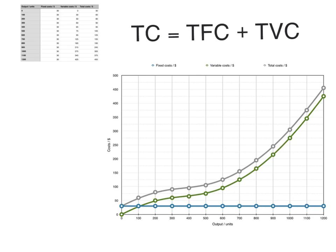If you graph this data from the previous slide, you will see that the fixed cost curve is that blue horizontal line. Because fixed costs do not change regardless of the level of output, when you plot a graph with costs on the vertical axis and output on the horizontal axis, the fixed cost curve is a horizontal straight line — here fixed costs were thirty, so it is plotted at thirty. Variable costs must always begin from the origin, from zero, because when your output is zero, your variable cost will be zero.